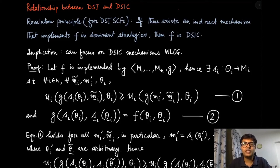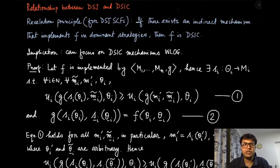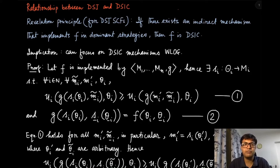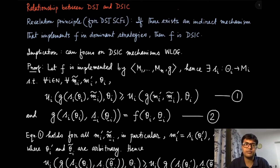In this module we are going to look at the relationship between dominant strategy implementability and dominant strategy incentive compatibility. We were discussing indirect mechanisms and direct mechanisms. If you can implement a social choice function using an indirect mechanism, we call that social choice function dominant strategy implementable. If the direct mechanism is itself implementable, we call it dominant strategy incentive compatible. We have hinted at a result showing some equivalence between these two things.